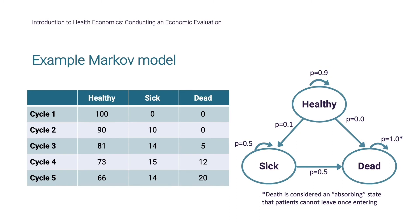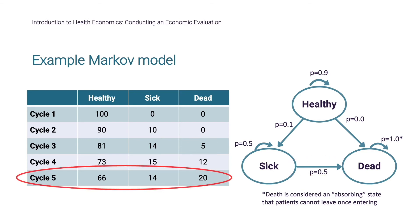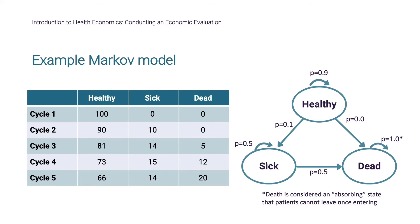After the first year, 10 patients would therefore transition to the sick state. And once in the sick state, they may transition to the dead state. After five years — five cycles in our example — patients have left the healthy state, transitioned to sickness, and then death. This is shown in the table.